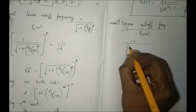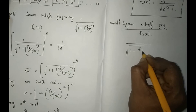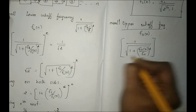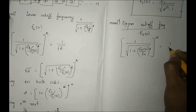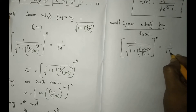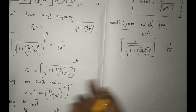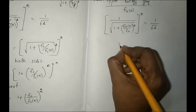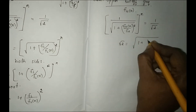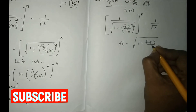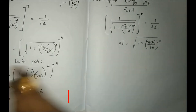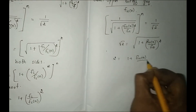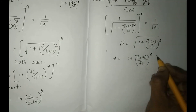1 divided by root of 1 plus fH(n) divided by fH, the whole squared. So for n number of stages, the mid-band gain is 1 by root 2 times. Using the same procedure — take the reciprocal, so root 2 is equal to root of 1 plus fH(n) divided by fH, the whole squared. Next, squaring both sides: 2 is equal to 1 plus fH(n) divided by fH, the whole squared.